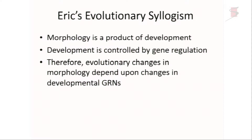One of the statements that Eric used to make all the time is the following syllogism, which he concluded demonstrated the importance of GRNs: morphology is a product of development; development is controlled by gene regulation; therefore, evolutionary changes in morphology depend upon changes in developmental GRNs. Full stop. And that's fine, as far as it goes.